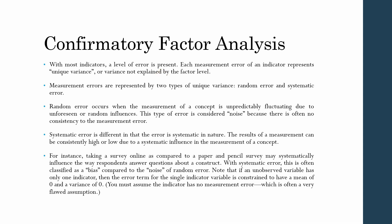Measurement errors are represented by two types of unique variance: they may be random error or systematic error. Random error occurs when the measurement of a concept is unpredictably fluctuating due to unforeseen or random influences.